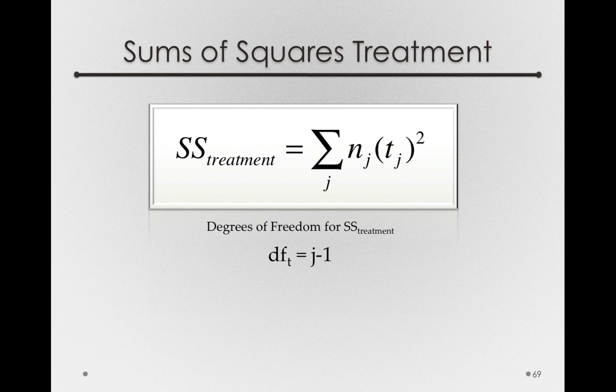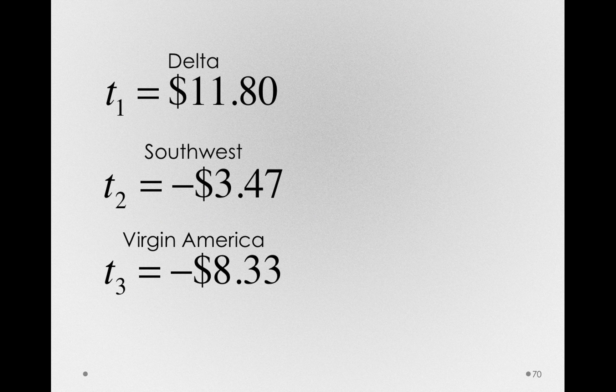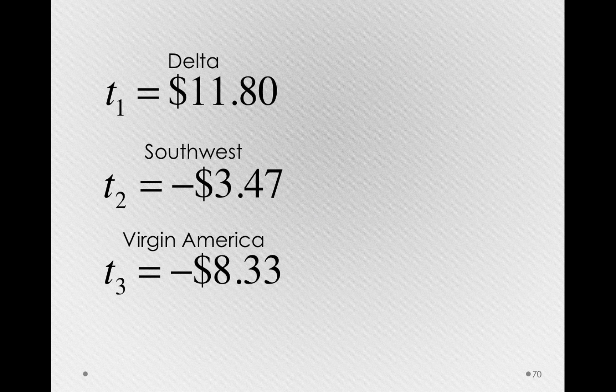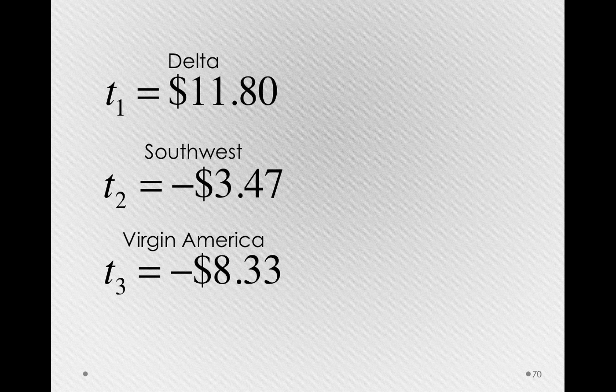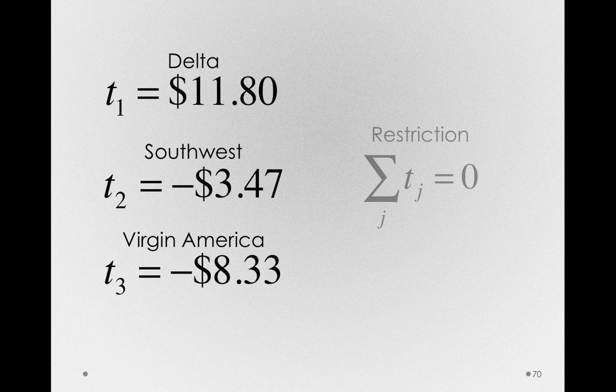There is a restriction on our data, like there always is when we are taking offsets from some mean. Here are the different t's for our different groups, so the t for Delta, Southwest, and Virgin America. You may have noticed something about these, which is that they all revolve around zero. So there is a restriction we have in our data.